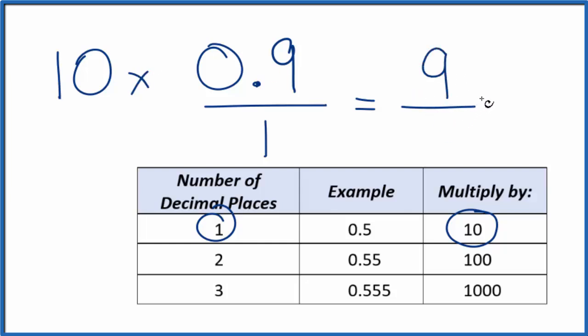So now we have a whole number, but 9, that's not equal to 0.9. So we ought to also multiply the bottom by 10. 10 over 10, that's just 1, so we're really multiplying by 1. We're not changing the quantity, just the representation.